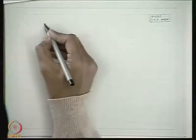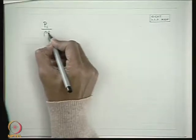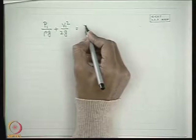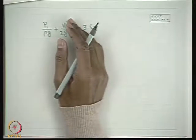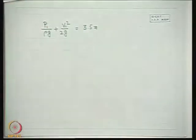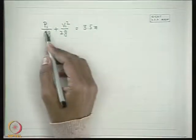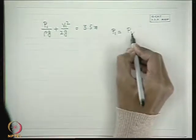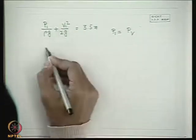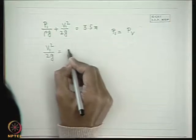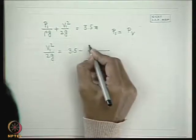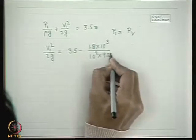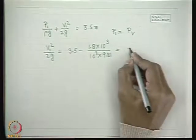In the first case, p₁/(ρg) + V₁²/(2g) = 3.5 meters is given, and cavitation began at this condition — meaning p₁ = p_v. The vapor pressure p_v is 1.8 kPa. Therefore, V₁²/(2g) = 3.5 − (1.8 × 10³)/(10³ × 9.81) = 3.32 meters.